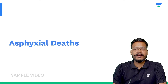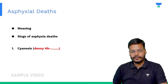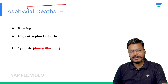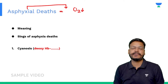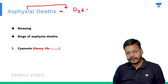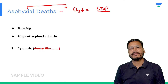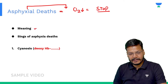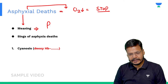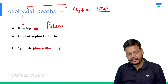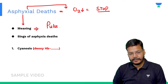We are starting a very important topic: asphyxial death. The first exam question is about the meaning of asphyxia. Asphyxia means lack of oxygen, or when your oxygen supply is stopped. The word meaning of asphyxia that comes in exams is 'pulselessness'.